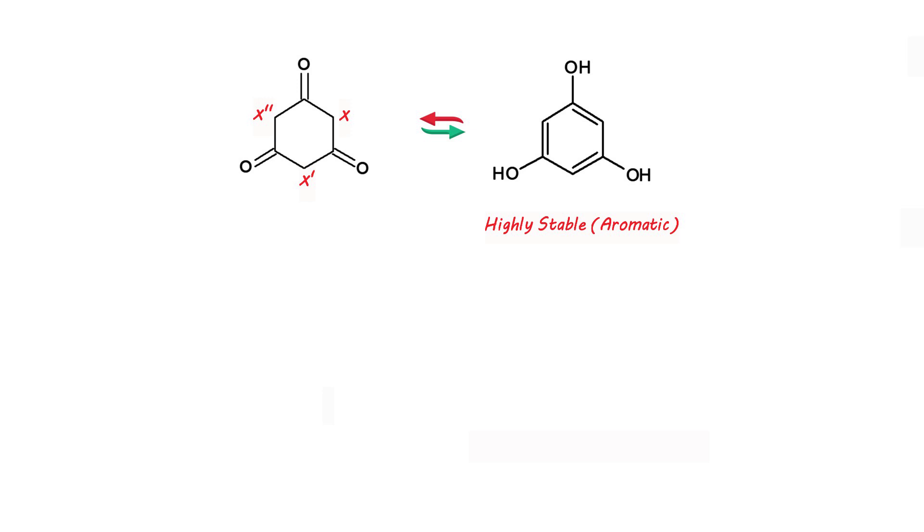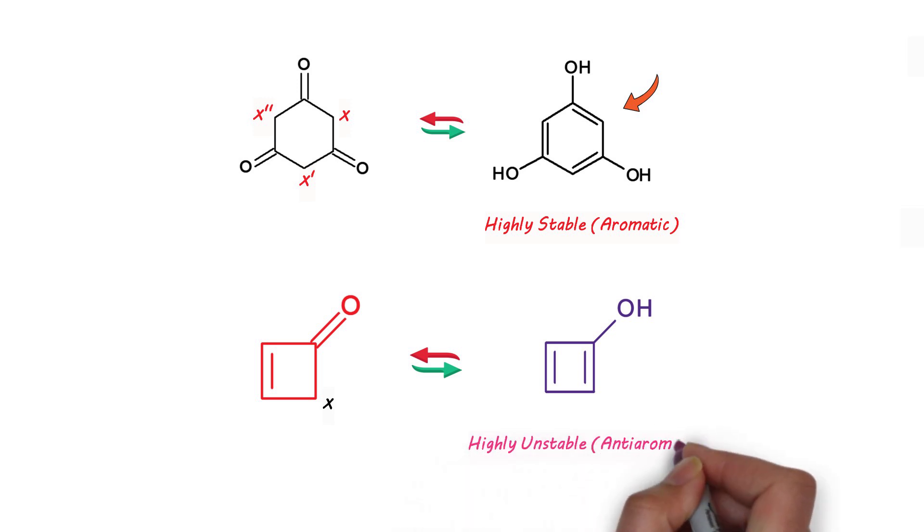Normally keto form is more stable compared to enol form, but in this case because of the development of aromatic character, this enol form is highly stable, even more than the keto form. In contrast, if we look at cyclobutenone type system, once hydrogen is migrated from X to oxygen, it leads to the formation of a system which is highly anti-aromatic. So this will be highly unstable because of anti-aromatic character produced in the system.